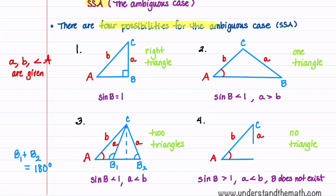There are four possibilities for the ambiguous case, given side A, side B, and angle A. One possibility is that we get a right triangle. The second is one triangle. The third is two triangles. And the fourth is no triangle. When we have a right triangle, the sine of angle B equals one. When we have one or two triangles, the sine of angle B is less than one. When we have no triangle, the sine of angle B is greater than one. When we have one triangle, the side opposite the given angle is bigger than the other side, and the reverse is true when we have two triangles.